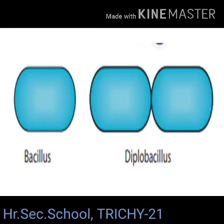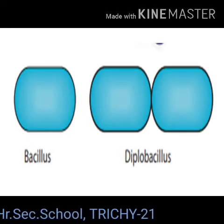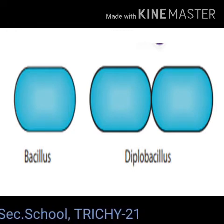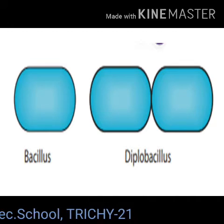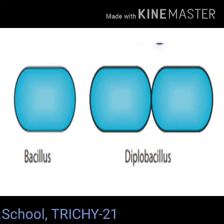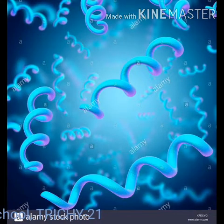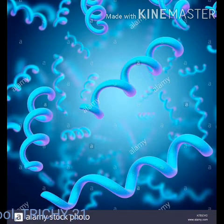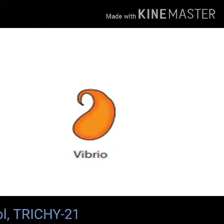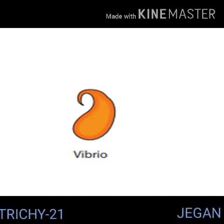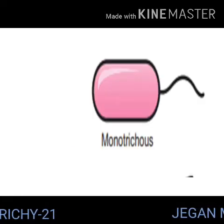Some bacteria are rod-shaped, and if it is rod-shaped then it is called bacillus. If we have two bacilli together, then it is said to be diplobacillus. Some bacteria are spiral in shape and it is called spirillum. Some bacteria are comma-shaped and it is called vibrio.